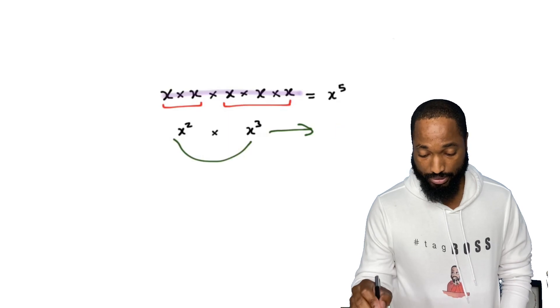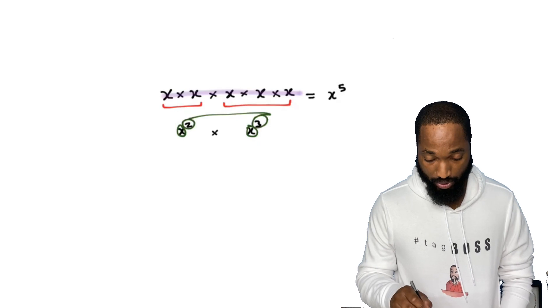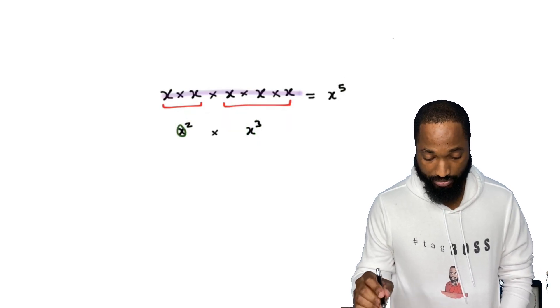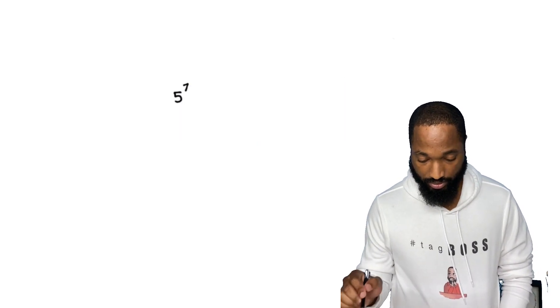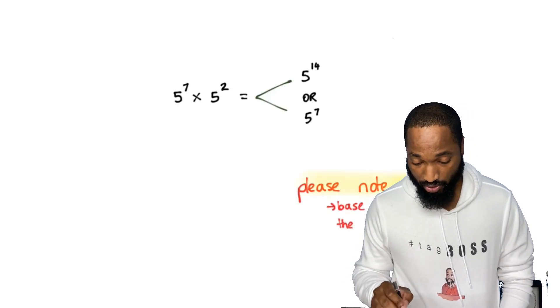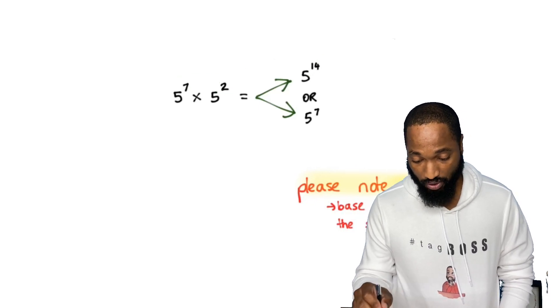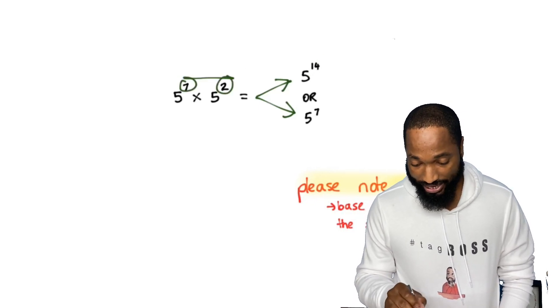Don't do that. When you are multiplying and you have the same base, you add the powers. So if you have five to the power of seven multiplied by five squared, which one do you think it's going to be?